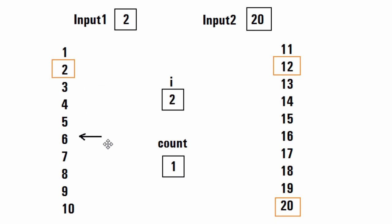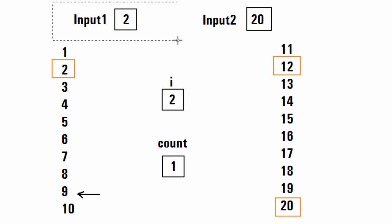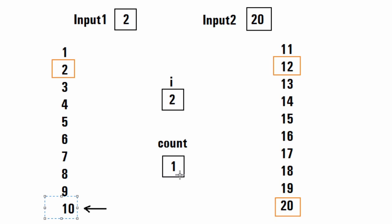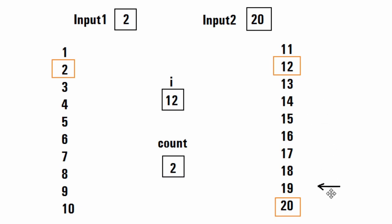We repeat this process till we reach nine. Since input one is a single-digit number, till nine we simply compare whether i matches input one. Once we reach ten, we have a two-digit number, so we need to split it and check each digit. For example, at twelve, we take the last digit two and compare it with input one — both match, so count is incremented. Then the next digit one does not match input one, which is two.